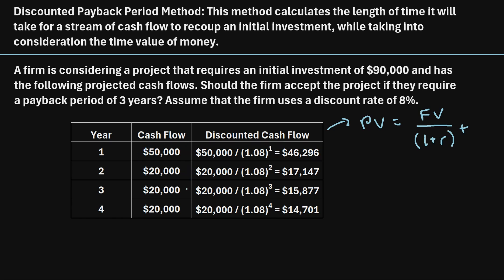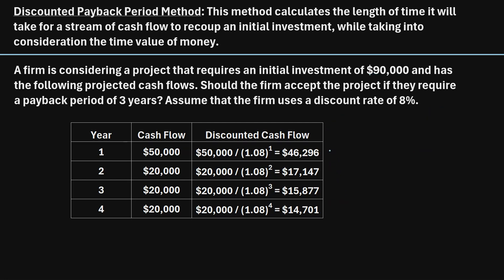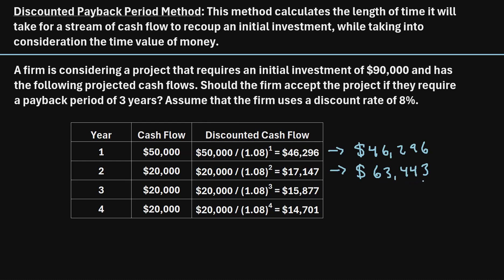We can repeat this process for years 2, 3, and 4 to calculate the present value of each of those cash flows. Using these discounted cash flows, we can determine how long it will take to get our $90,000 back. After one year, we will have recouped $46,296. After two years, we add another $17,147, bringing the total to $63,443. After three years, we add another $15,877, bringing our total cumulative cash flow up to $79,320.